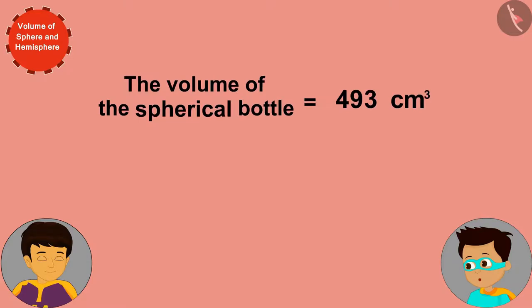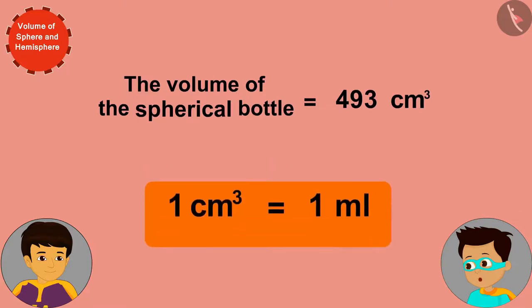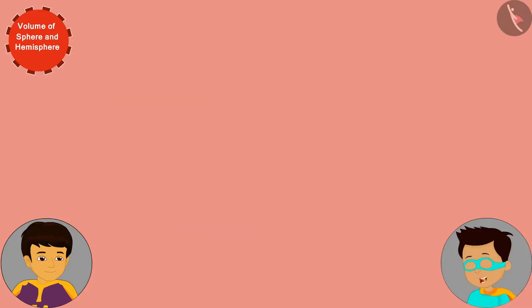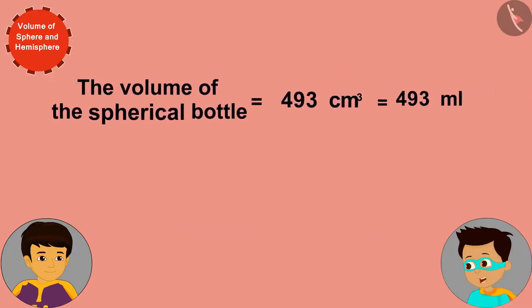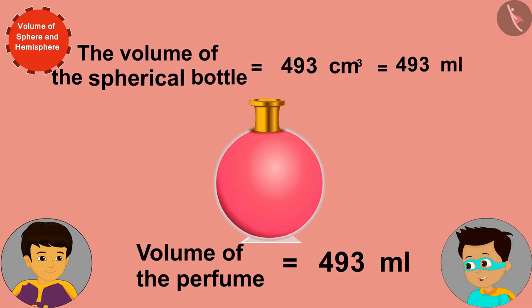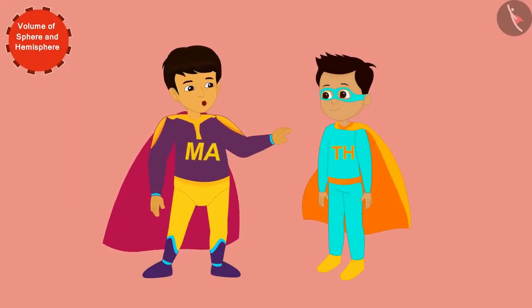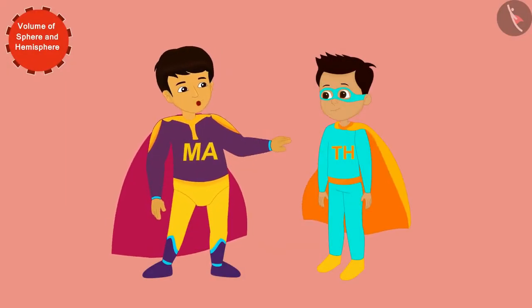Because one cubic centimeter is equal to one milliliter, we can say that 493 milliliters of perfume is filled in the spherical bottle.